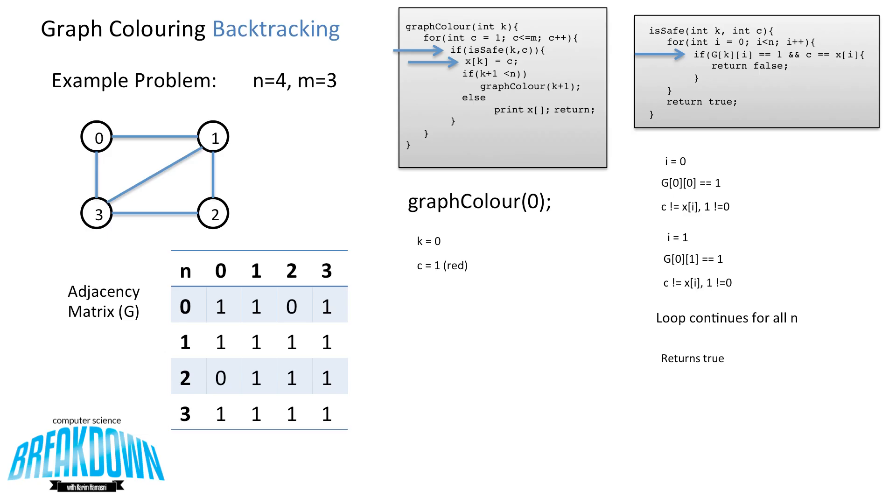Because it is safe, now back at the graph coloring function, it'll set X[K] equal to C. So X[0] is now equal to 1, which means we've colored in the node at 0 as red. We then check to see if K plus 1 is less than n. And in this case, 0 plus 1 is equal to 1. And that's less than 4. We can now recursively call graph color for K plus 1. So we recursively call graph color. Now the value is 1.